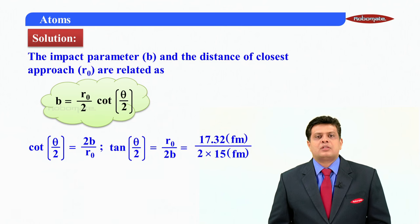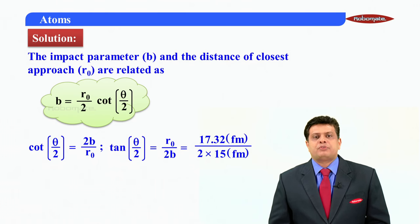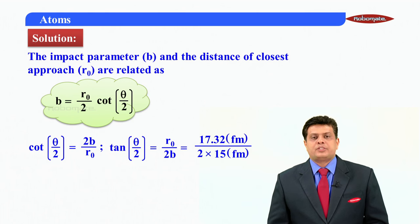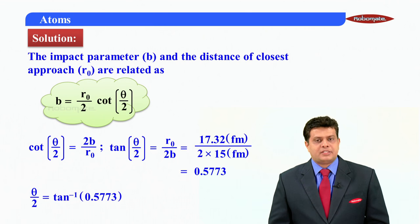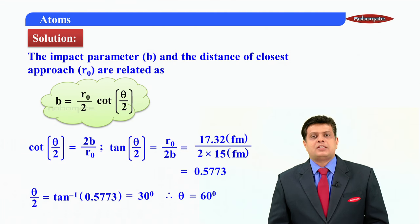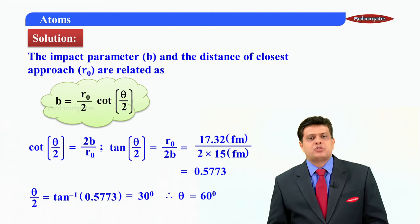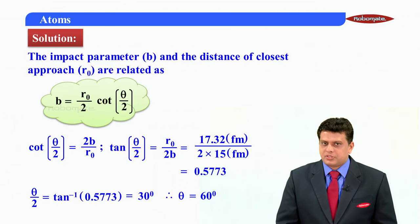I know the value of R-naught, 17.32 Fermi divided by 2 into 15 Fermi, right? So 17.32 divided by 30 and that will give the answer as 0.5773, that is tan theta by 2. And theta by 2 is equal to tan inverse of 0.5773, that's a popular number which is 30 degree, that is theta by 2. What is theta? Theta is nothing but 60 degree. Calculation should reveal this answer, theta is equal to 60 degree.